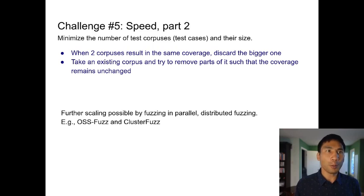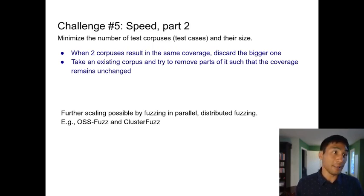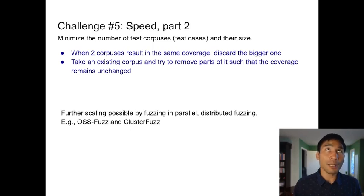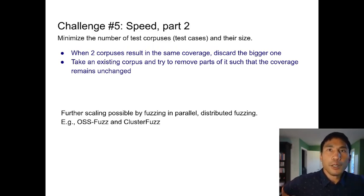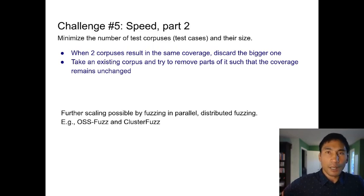We minimize the number of test cases so the fuzzer doesn't have to run the same thing over and over — it eliminates redundant computation. When you have two corpuses that give you the same coverage, you discard the bigger one. The usual answer for scaling is to fuzz in parallel or do distributed fuzzing on a cluster. OSSFuzz does that — it runs on multiple computers.